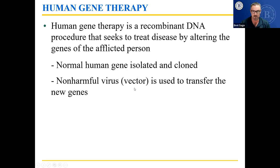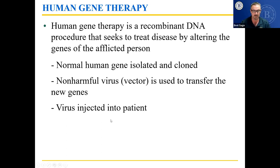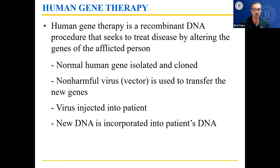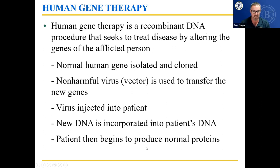A non-harmful virus — which is a vector, meaning it moves something from one place to another — is used to transfer the new genes. The virus is injected into the patient, and the new DNA is incorporated into the patient's DNA. This last step is the most difficult: when you inject the virus, it has to find every single afflicted cell, inject its DNA, break into the human chromosome, put in the normal gene, and do so without causing cancer. This is very difficult because the human genome has many safeguards against this, developed over millions of years of evolution. The patient then ideally begins to produce normal proteins.